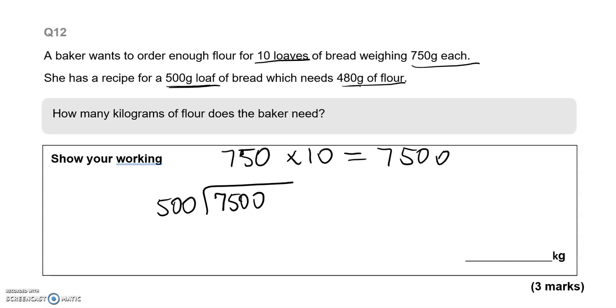So how many 500s fit into 7,500? How many 500s fit into 750? That is just 1. And then we've got 250 left. So in 2500, how many 500s fit? That would be 5. So she needs 15 times more flour. So 480 times 15.